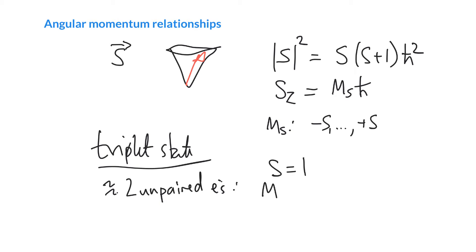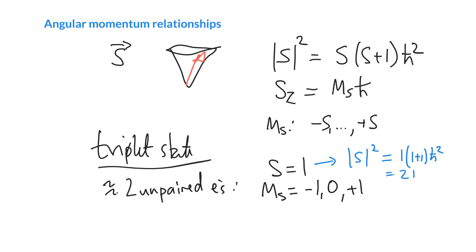With s = 1, the squared length of the spin angular momentum is 1×(1+1)ℏ² = 2ℏ², so the length of the spin vector is √2·ℏ. The z-component s_z = m_s·ℏ, which means it equals either −ℏ, 0, or +ℏ. So we know the angular momentum has length √2·ℏ and its z-component takes three possible values.